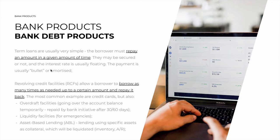There's a whole variety of repayment modalities for both the principal and the interest, but these are just examples. Revolving credit lines, also known as RCFs, are credit facilities that allow a borrower to borrow as many times as needed, up to a certain amount, and repeat this as many times as they wish within that credit limit and that period. So, unlike term loans where you borrow once, here you can borrow countless times as long as you pay it back. The most common example, again, are credit cards.